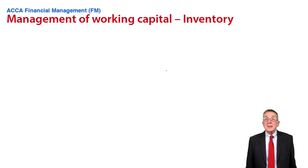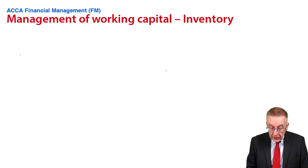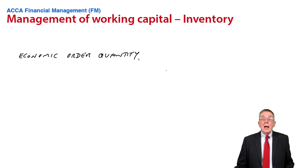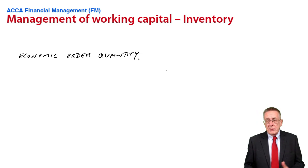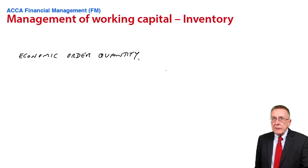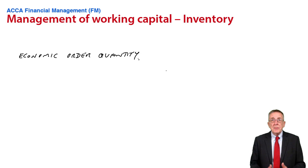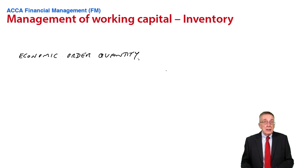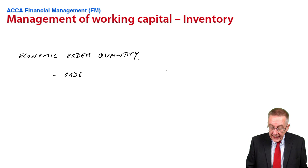First of all, the EOQ model — economic order quantity. We're looking at how to order inventory. It's supposed to be a store buying and selling desks, and how to go about placing orders. Although in real life there are lots of different systems we might use for deciding how we're going to place orders from the supplier, with economic order quantity we assume right from the beginning that we order in fixed batch quantities.